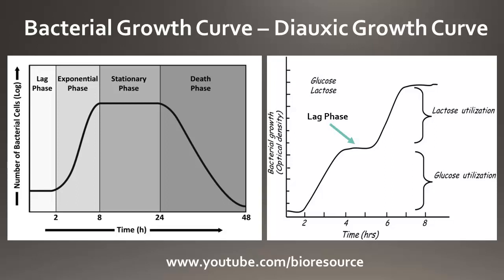Once that lag stage is crossed and the bacteria are adapted, they have all the nutrients available in the media and start growing in an exponential manner. Once exponential growth has peaked, it enters the stationary phase, where all nutrients are utilized by the bacterial cells and toxic products are accumulating in the media. After the stationary phase, bacterial cells enter the death phase. That is the typical growth curve of bacteria: lag phase, exponential phase, stationary phase, and death phase.